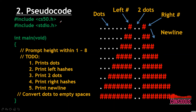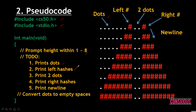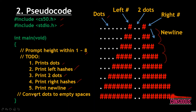In the pseudocode, we include two libraries: cs50.h and stdio.h. In the integer main void function, we prompt the user to key in a height within one to eight inclusively. The to-do list involves: printing the dots, printing the left hatches, printing the two middle dots, printing the right hatches, printing a new line at the end of each row, and finally converting the dots to empty spaces.